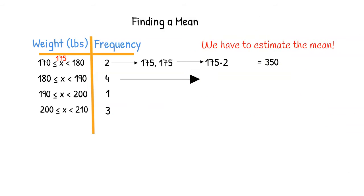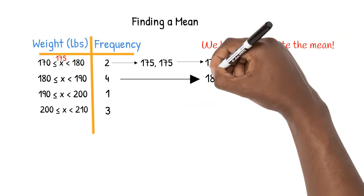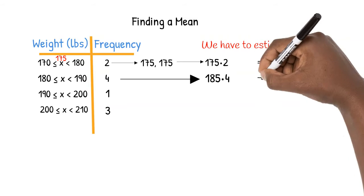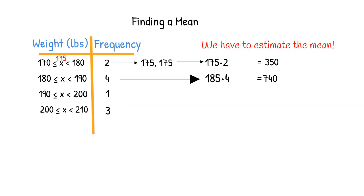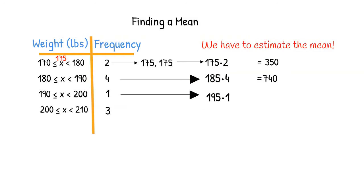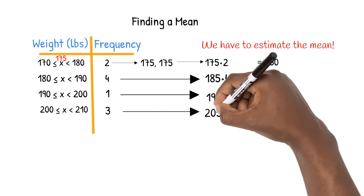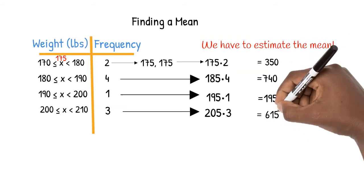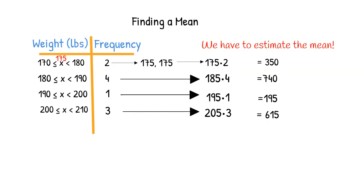Since four people are in the next range, we multiply the mid-interval value 185 by four to get that their total weight is approximately 740 pounds. We multiply 195 by one since there's only one person in that category, and we multiply 205 by three to get that the three largest men have a total weight of 615 pounds.